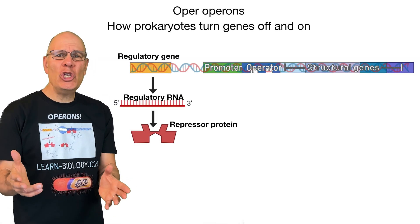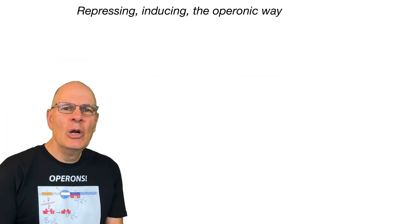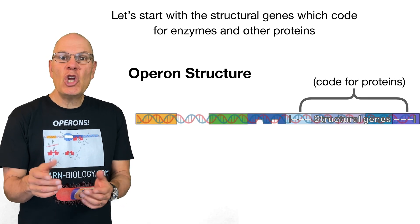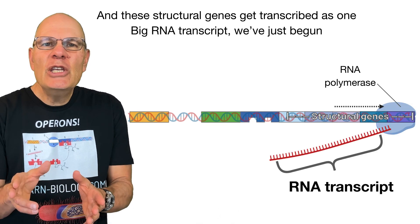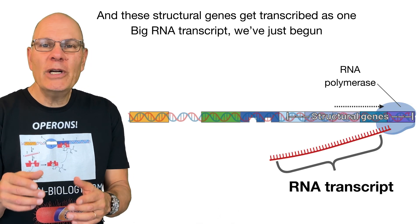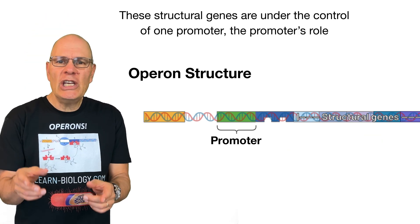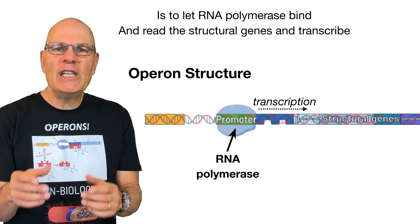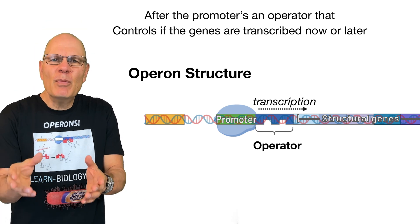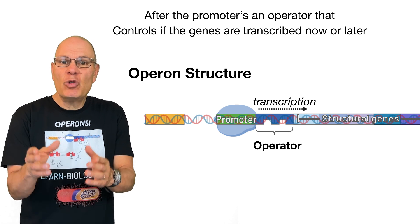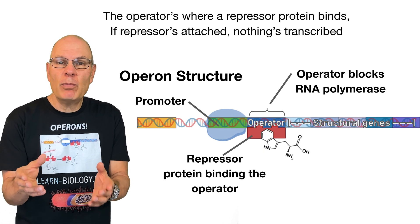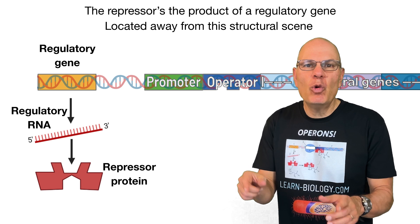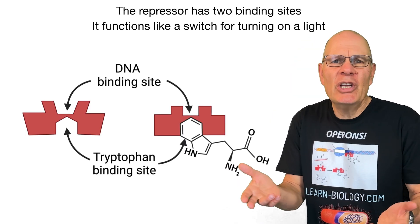Operons in prokaryotes turn genes off and on. Let's start with the structural genes, which code for enzymes and other proteins. These structural genes get transcribed as one big RNA transcript. These structural genes are under the control of one promoter. The promoter's role is to let RNA polymerase bind to read the structural genes and transcribe. After the promoter is an operator that controls if the genes are transcribed now or later. The operator is where a repressor protein binds — if the repressor is attached, nothing is transcribed. The repressor is the product of a regulatory gene located away from this structural scene.